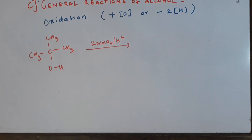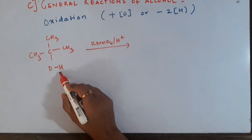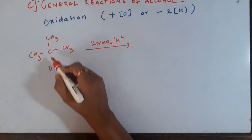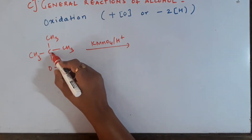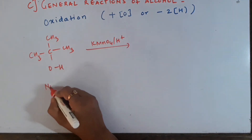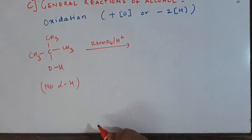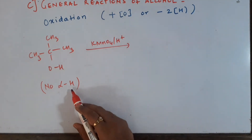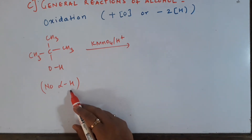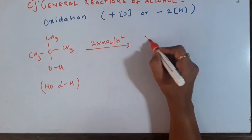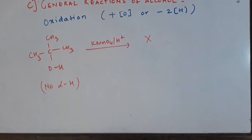Let us oxidize tertiary butyl alcohol with KMnO4. KMnO4 is a very strong oxidizing agent, but the difficulty here is that tertiary alcohols do not have an alpha hydrogen atom. This prevents their oxidation — tertiary alcohols are resistant towards oxidation because they lack an alpha hydrogen atom. So the reaction does not take place under normal conditions.